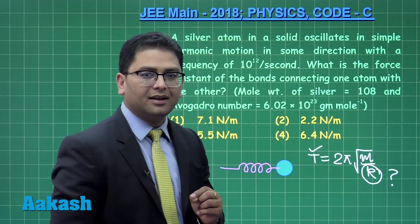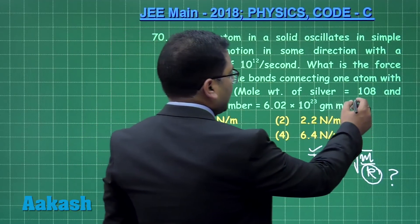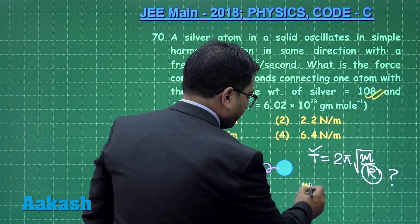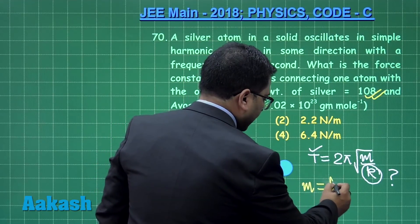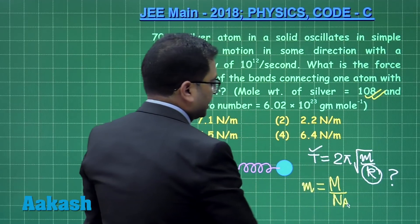I have the expression T equals 2π√(m/K). T has already been given, K is to be calculated, this is the required one. M being the mass of one atom is to be calculated, and there is no big deal because all the constants are given.